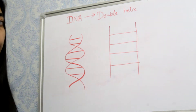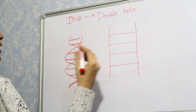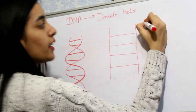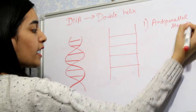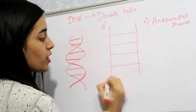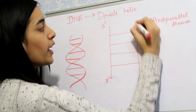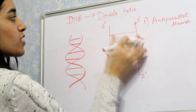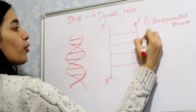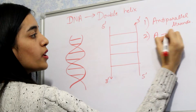Some important points about the double helix DNA structure: the first point is that the two strands of DNA are anti-parallel. This means that if one strand starts from 5' and ends at 3', then the opposite strand will start from 3' and end at 5' — this is what anti-parallel means.